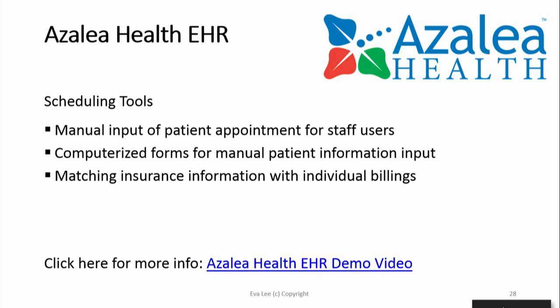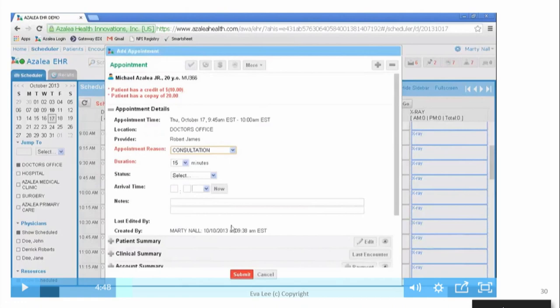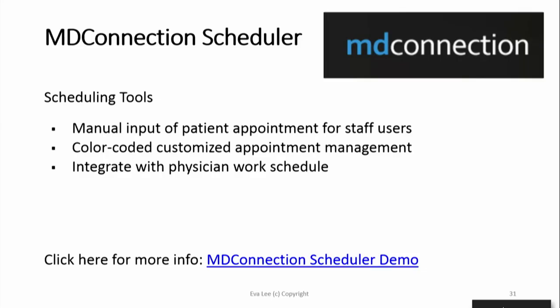Then there is one system that matches insurance information with individual billing — one step more than just billing. It allows you to check with your insurance what type of places you should be seeing doctors. It has very complicated color-coded dashboards. This is the first system I saw that focuses on physicians — you can see how the doctor's schedule connects with the patient's needs. If you have no provider time, you can't really do scheduling for patients.